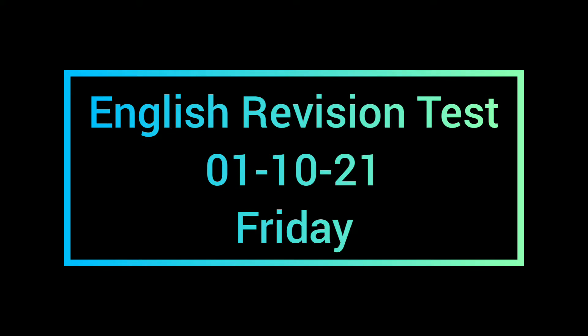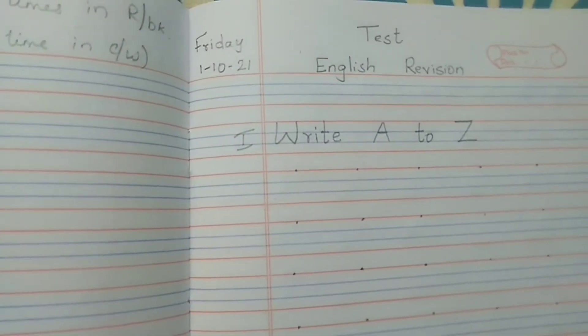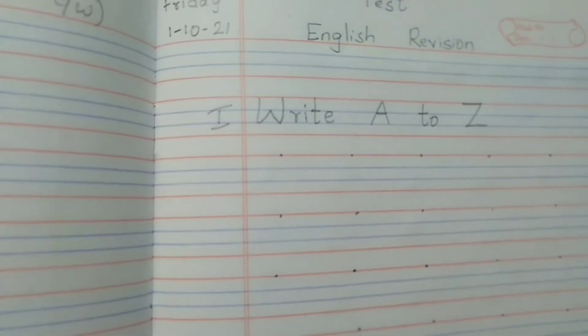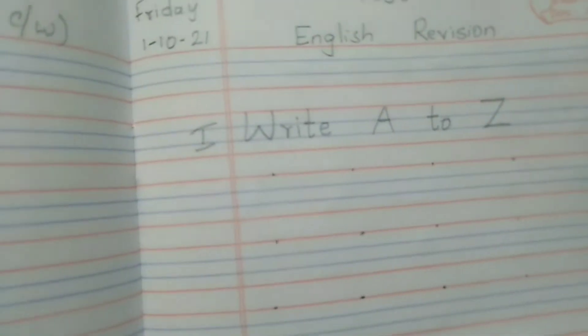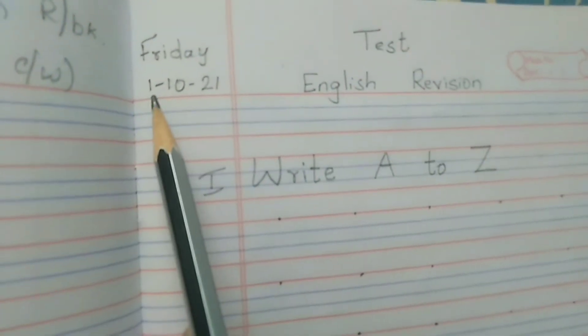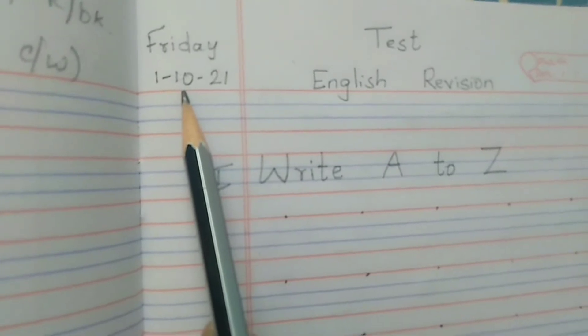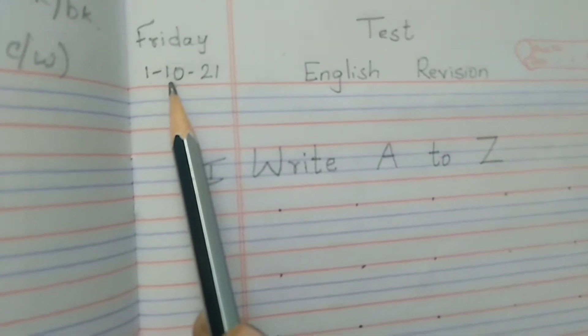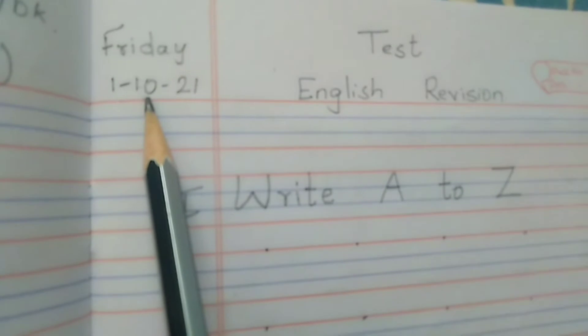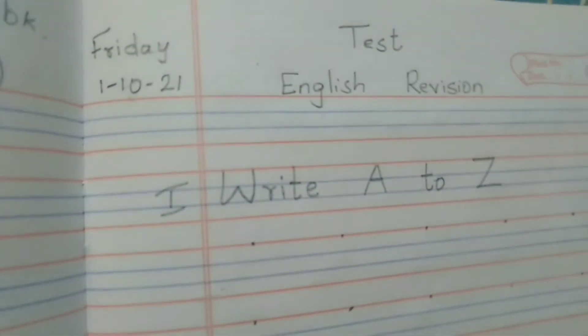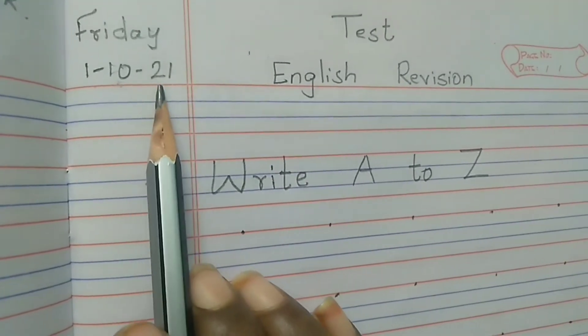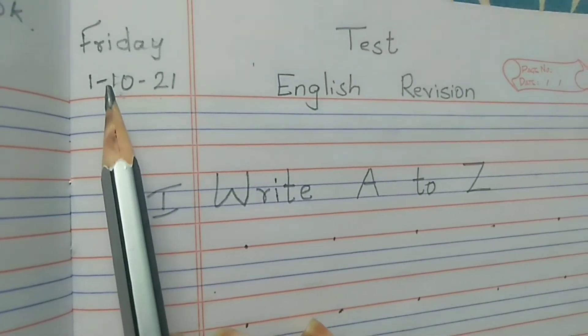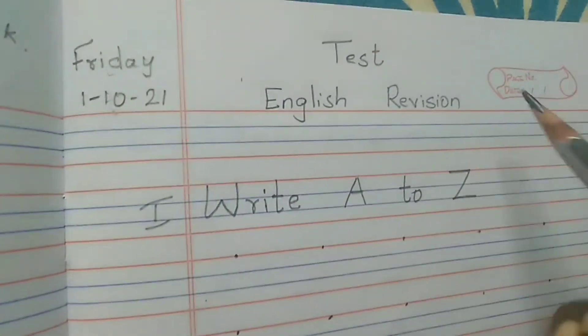English revision test. Good morning children, this is your English revision test. Write it in your English classwork. I'll explain once first. Write the date first. Today is 10th - September is over, we are in the new month October. 1-10-2021 and today is Friday, F-R-I-D-A-Y. Write your date, day, and then your name.